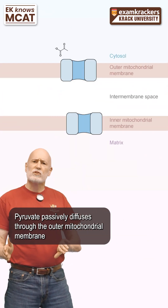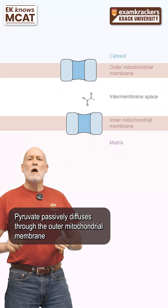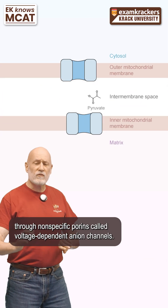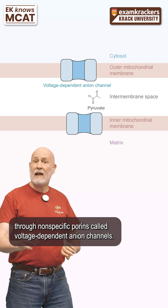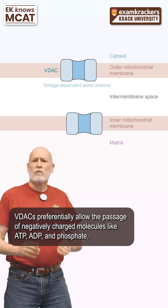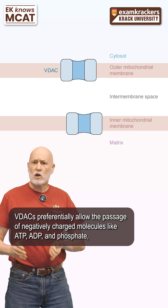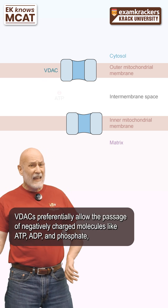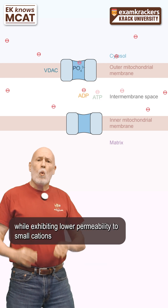Pyruvate passively diffuses through the outer mitochondrial membrane through nonspecific porins called voltage-dependent anion channels. VDACs preferentially allow the passage of negatively charged molecules like ATP, ADP, and phosphate.